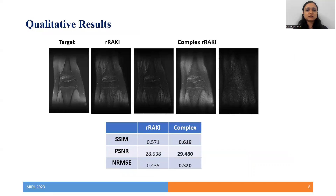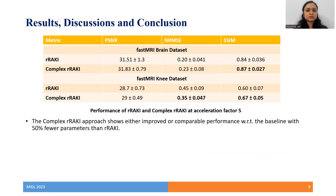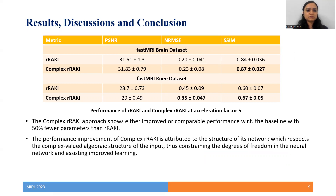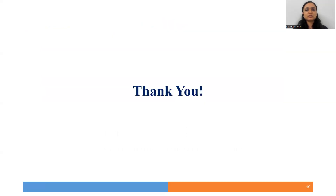This is a sample knee reconstruction. These are the quantitative results on both datasets. The complex RRaK approach shows either improved or comparable performance with respect to the baseline, with 50% fewer parameters. The performance improvement is attributed to the structure of its network, which respects the complex-valued algebraic structure of the input, constraining the degrees of freedom and assisting improved learning. The proposed plane-ReLU activation function shows promising potential for complex-valued neural networks. Thank you.